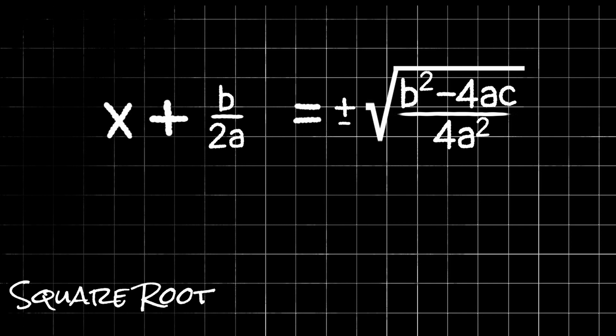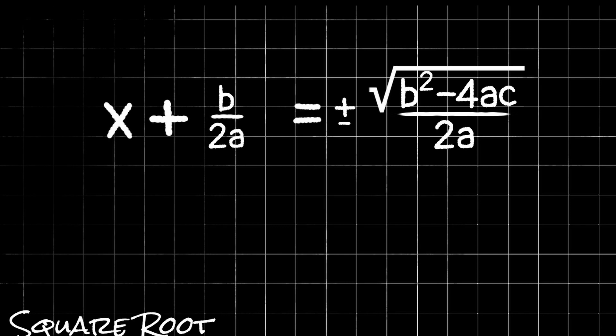When taking the square root of a fraction, we can separate that into just taking the square root of the numerator and taking the square root of the denominator. And in doing so, the square root of 4a squared can actually simplify to 2a because 2a times 2a gets us right back to that 4a squared.